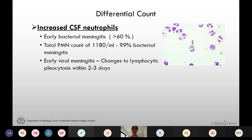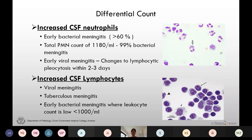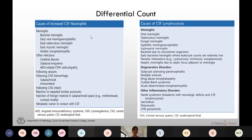We see increased CSF neutrophils in early bacterial meningitis — up to more than 60 percent — and if the total cell count is more than 1180 per microliter, it gives 99 percent predictive value for bacterial meningitis. Increased neutrophils can also be seen in early viral meningitis but it changes to lymphocytic pleocytosis within two to three days. Lymphocytes are specifically increased in viral, tuberculosis, and fungal meningitis, and in early bacterial meningitis where the total leukocyte count is less than 1000 per microliter.